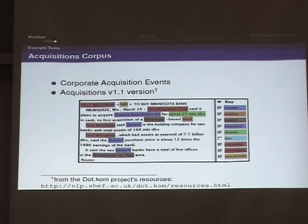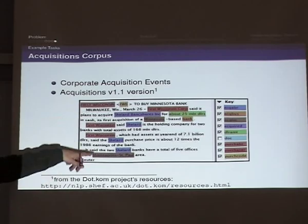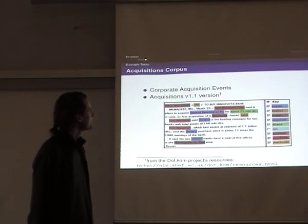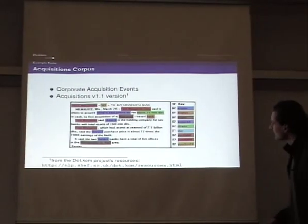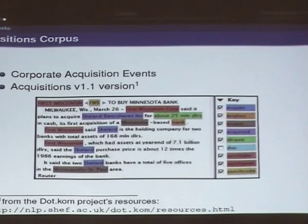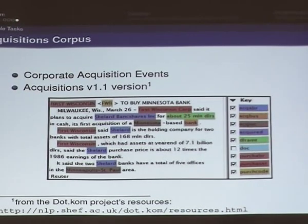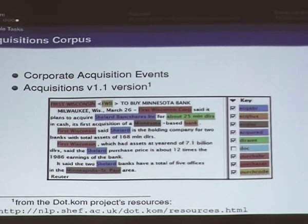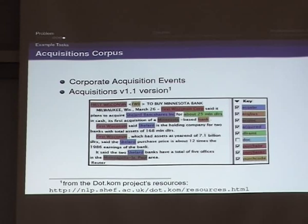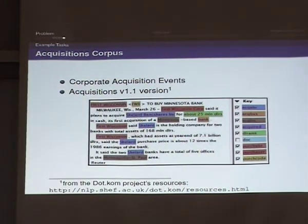Another example is in English, from the corporate acquisition event corpus. There is decorated information: in red the acquirer, in blue the acquired entity, and the dollar amount which is the subject of the acquisition. This is mainly about named entity recognition and deciding which named entity plays which role in the text.